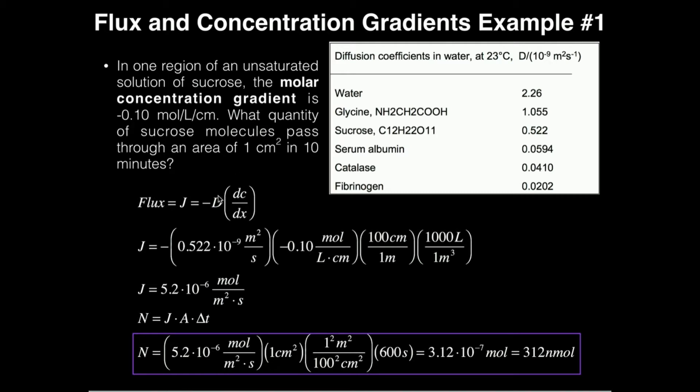And then we have to multiply that times d, which is our diffusion coefficient, which we can look up in the table. And the question is, what quantity of sucrose molecules pass through an area of one square centimeter in 10 minutes.